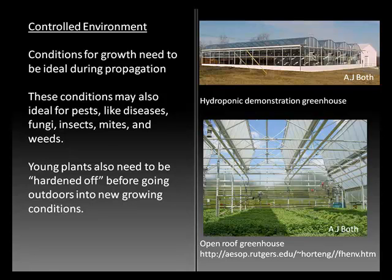However, these conditions may also be ideal for pests, diseases, things like fungi, insects, mites, and weeds. Control of those things will be covered next week when we talk about integrated pest management. But the more ideal conditions are for plants, and the more plants of one specific species or variety are located in a greenhouse or propagation structure, the more exposed they are to these diseases and pests. So it's very important to maintain constant vigilance and to be prepared for these events.